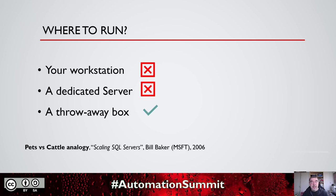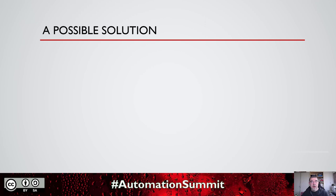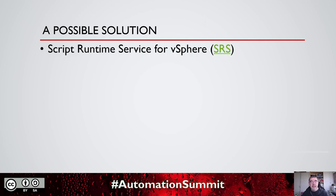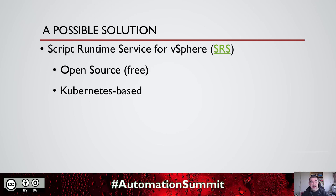That seems to be an ideal solution and this brings us to the famous pets versus cattle analogy. This expression dates already from 2006 when it was coined by Bill Baker, a PM for SQL servers at Microsoft. One possible solution that we quite like is what is called SRS — Script Runtime Services for vSphere. Don't be taken away by the vSphere — you can use it for other platforms as well. First of all, this is open source so the thing is free to run. It's based on Kubernetes. You have REST APIs to interface with the server that allows you to upload scripts, run scripts, monitor scripts, and return the output from those scripts.